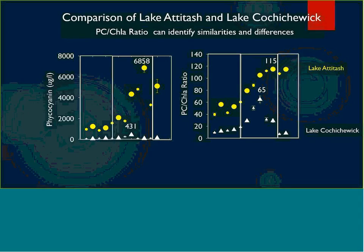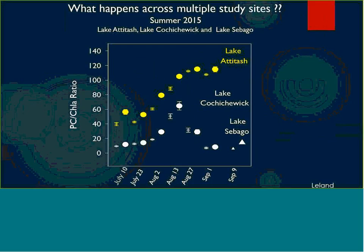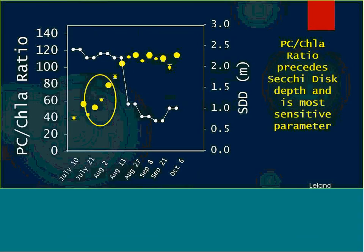As we compare the PC to chlorophyll A ratio, now we start to see the trend taking place in the other lake as well — it's a more fine-tuned measurement of what's going on within the water body. This is really interesting data because the PC to chlorophyll A ratio kind of shows where that transition takes place between the green algae dying off mid to late summer and the blue-green cyanobacteria taking over and out-competing it.